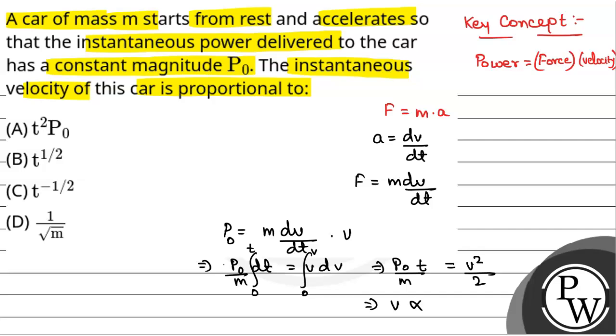V will be directly proportional to root over t. V is directly proportional to option B that is root over t.